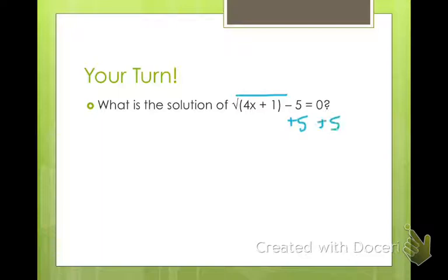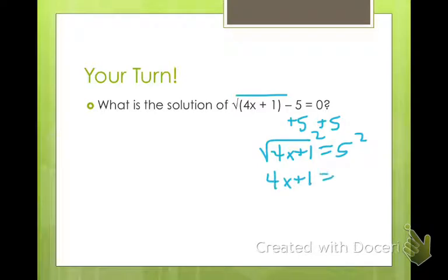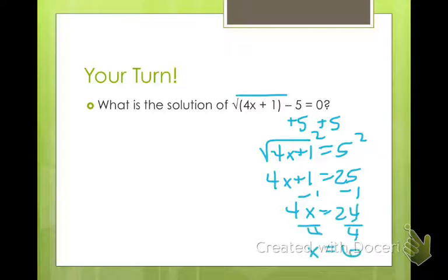First thing we do is add 5, giving us the square root of 4x plus 1 equals 5. Now I'm going to square both sides: 4x plus 1 equals 25. Subtract 1, so 4x equals 24; divide by 4 and x equals 6. Make sure you plug it back in: 6 times 4 is 24; 24 plus 1 is 25; square root of 25 is 5; 5 minus 5 equals 0. Our solution checks.